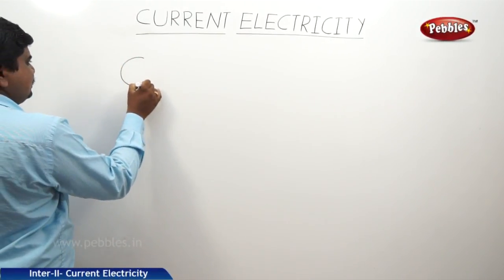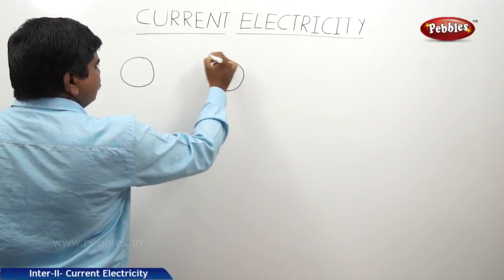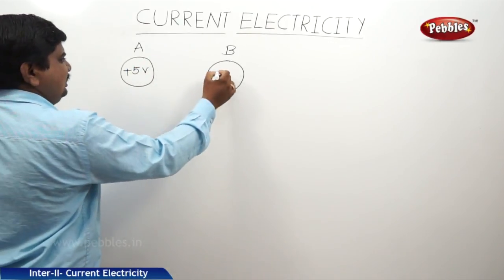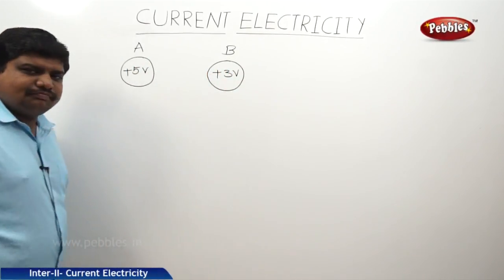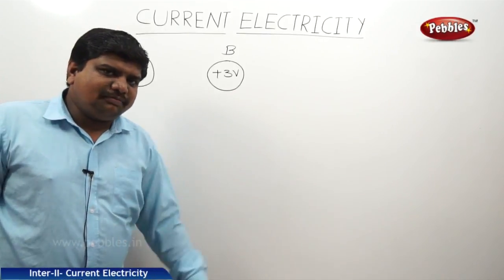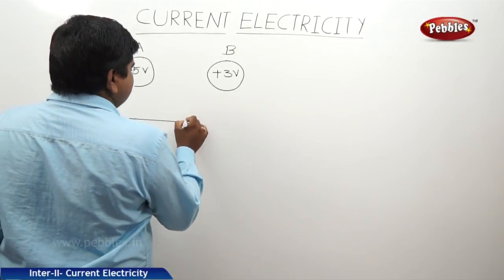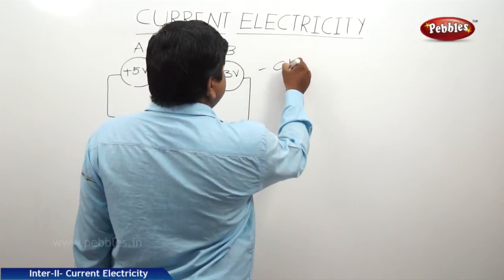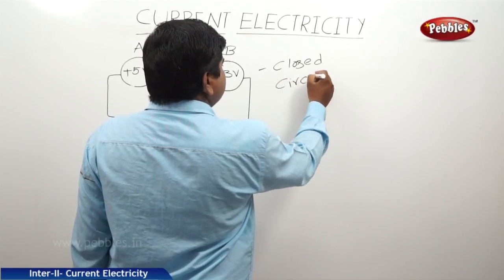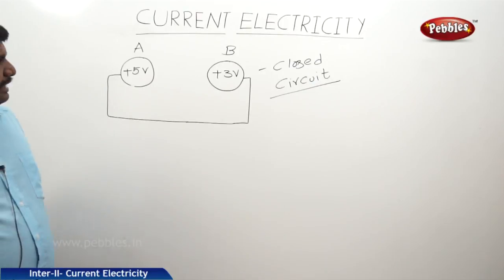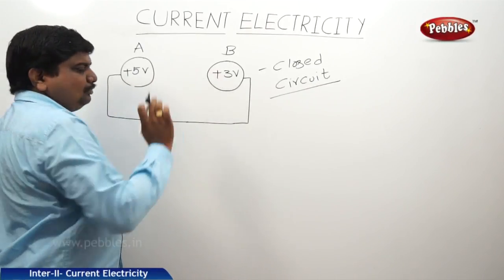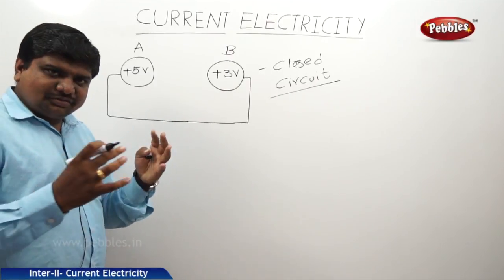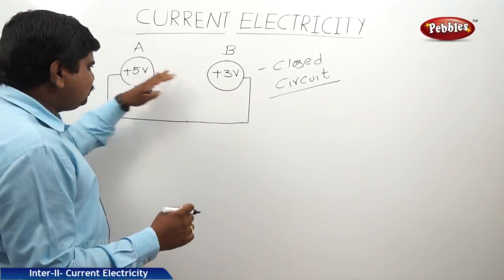So, consider two bodies A and B. A is connected to plus 5 volts, B is connected to plus 3 volts. Now, these two sources are connected through a wire. When these two are connected through a wire, we can say this one as closed circuit. We should connect through a wire.